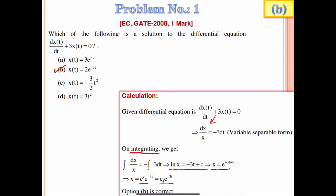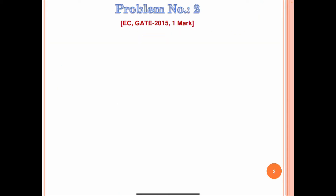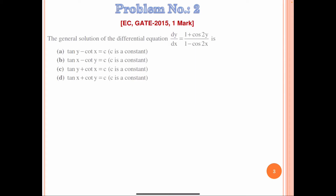Now question number 2. This question was asked in Electronics and Communication GATE 2015. The statement is: the general solution of the differential equation dy/dx = (1 + cos 2y) / (1 − cos 2x) is.